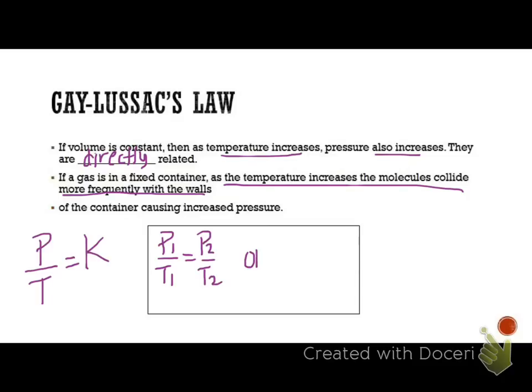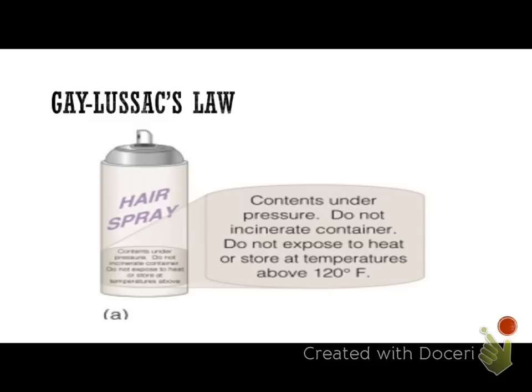Just like what we did with Charles' law, we're going to go ahead and cross multiply to get everything on the top, and so we would have P1 times T2 is equal to P2 times T1. Just like Charles' law where you'd never have volume and temperature, the initial multiplied together, it's the same thing here, you're not going to have P1 and T1 multiplied, they're always going to be on opposite sides. This is just an example of Gay-Lussac's law, why you shouldn't put aerosol cans in a fire, it's very dangerous, because they will explode because they can't contain the pressure as the temperature increases.